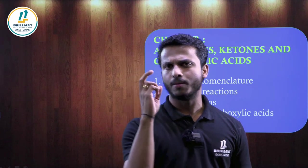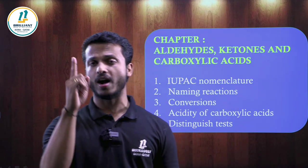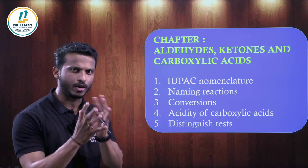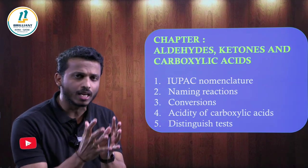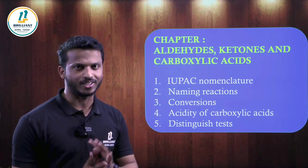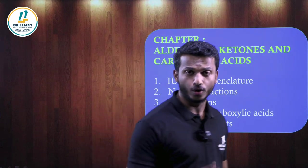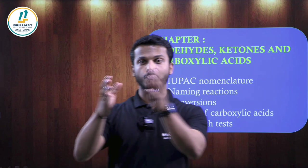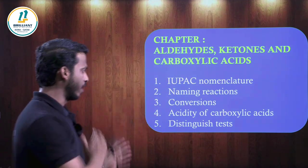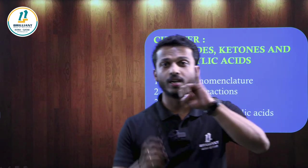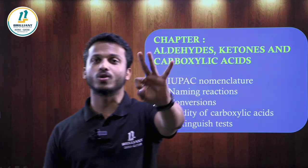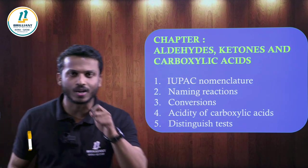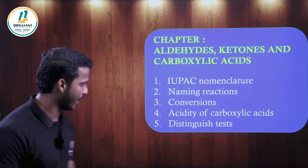From carboxylic acid: the HVZ (Hell-Volhard-Zelinsky) reaction and decarboxylation are important. Conversion questions — aldol, cross-aldol, Cannizzaro — should be remembered. Acidity of carboxylic acid is important: electron-withdrawing groups increase acidity, electron-donating groups decrease acidity. They will give you compounds and ask which is more or least acidic. Distinguishing tests: Schiff's test, Fehling's test, Tollens' test (silver mirror test), and iodoform test for aldehydes and ketones. For carboxylic acid: sodium bicarbonate test — brisk effervescence is observed.